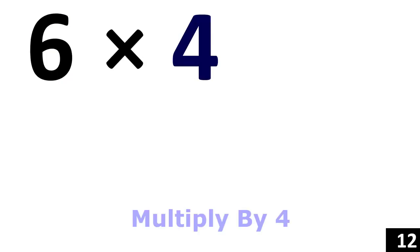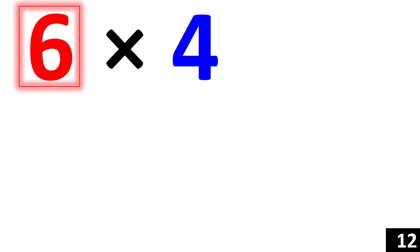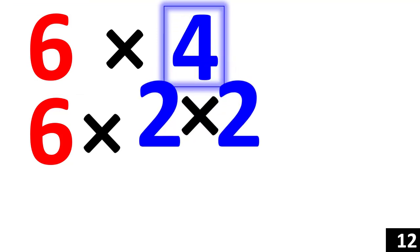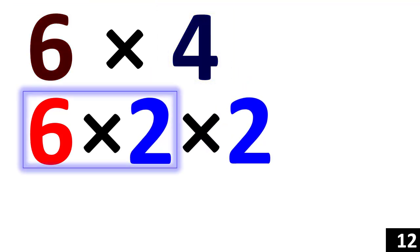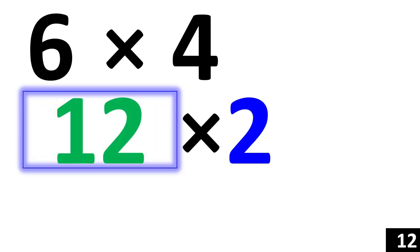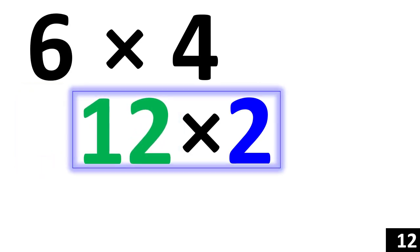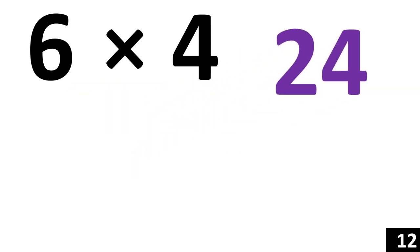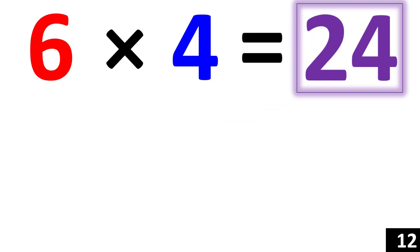For 6 times 4, we just use the rule of 4. 6 times 4 is the same thing as 6 times 2, two times. 6 times 2 is equal to 12, and 12 times 2 is equal to 24. Therefore, 6 times 4 is equal to 24.